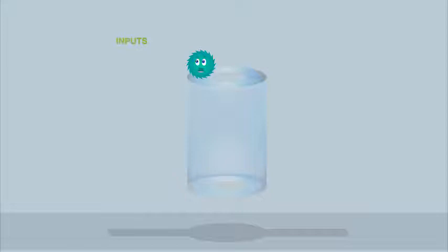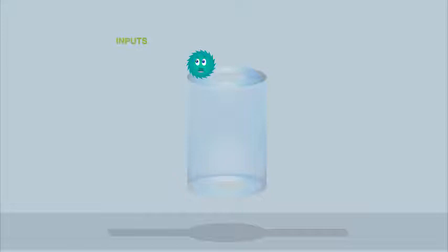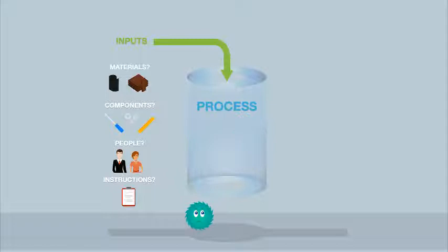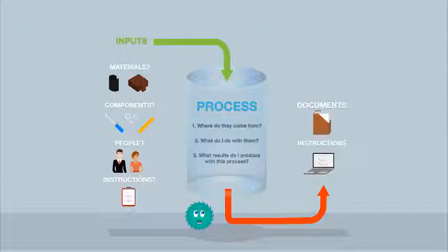Now, for every process in the process flow, each process will have ins and outs. Each process has materials, parts, components, people, systems—there are things that you need in order to apply the steps in the process to produce the required output,